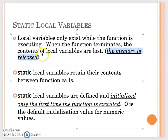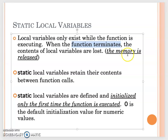Earlier we showed you that when you have a program running, we run the main function and the CPU will assign a specific memory location to save all the variables and information for main. The same thing happens when we code a function — we allocate a specific memory location to store the local variables and the passing parameters. Once the function terminates, the content of local variables is lost because the memory is released.